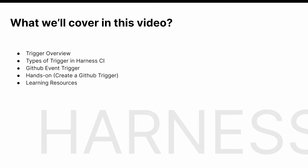What we will cover in this video is an overview of what a trigger is. We'll also see the different types of triggers in Harness CI, understand what a GitHub event trigger is, have a hands-on over a pipeline where we'll create a GitHub trigger, and then see what learning resources are available.